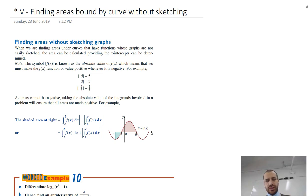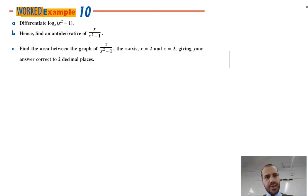So let's try a question, this one's a real beauty, I really like this. Alright, so it says differentiate log base e x squared minus 1, hence find an antiderivative of this, so super complicated, let's work through it. So it's one of those integration by recognition style questions.